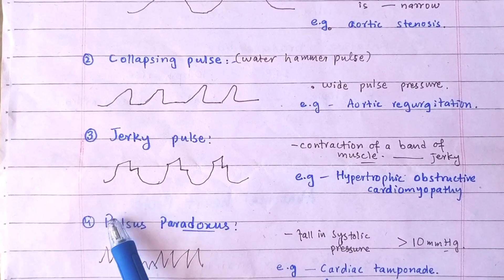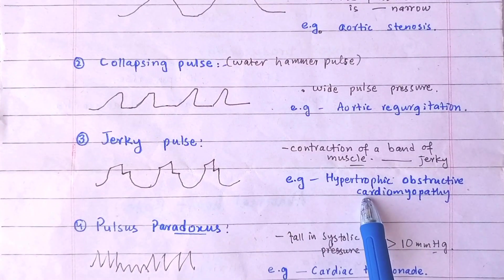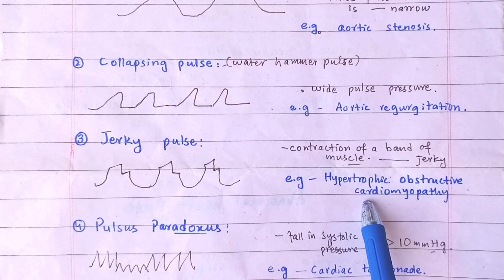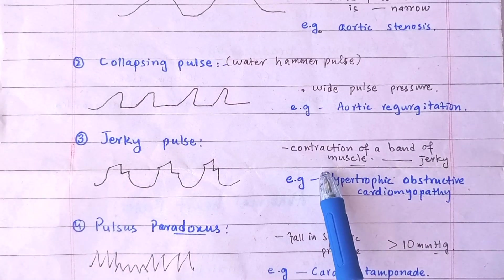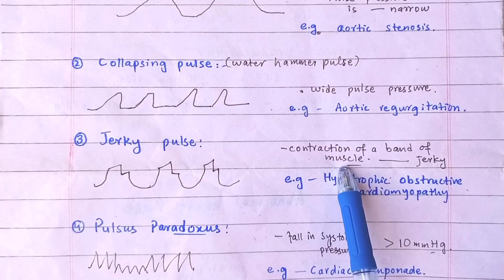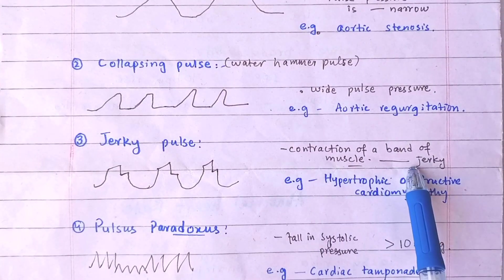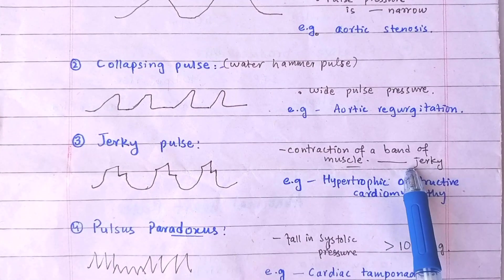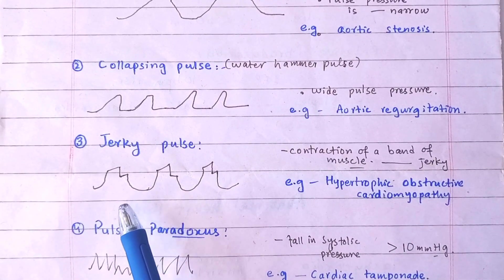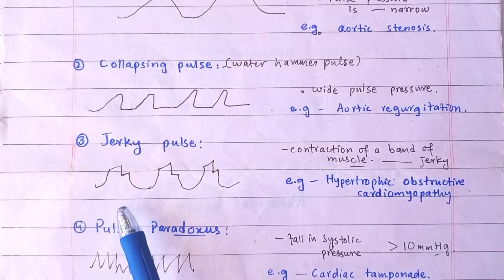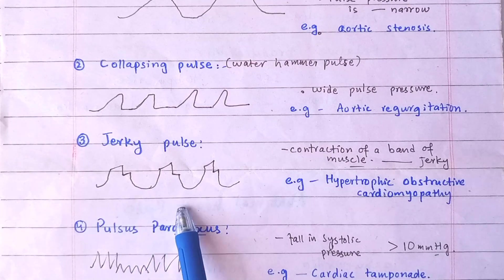Jerky Pulse. In hypertrophic obstructive cardiomyopathy, ejection of blood is normal initially. It is then suddenly obstructed by the contraction of band of muscles in aortic outflow tract. It gives a jerky character to the pulse. The waveform of jerky pulse is like this.